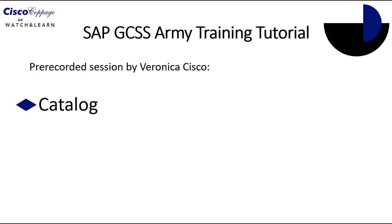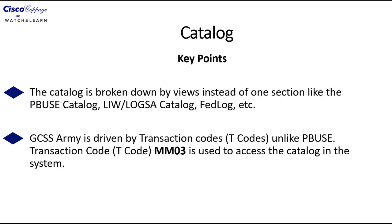This tutorial is designed to teach you how to access the catalog inside of GCSS Army. Before we get into the lesson there are some key points that need to be discussed. The first key point is that the catalog is broken down by views. What that means for you is that you have to select a different view to see the price of that item, to see the ARC code of that item.